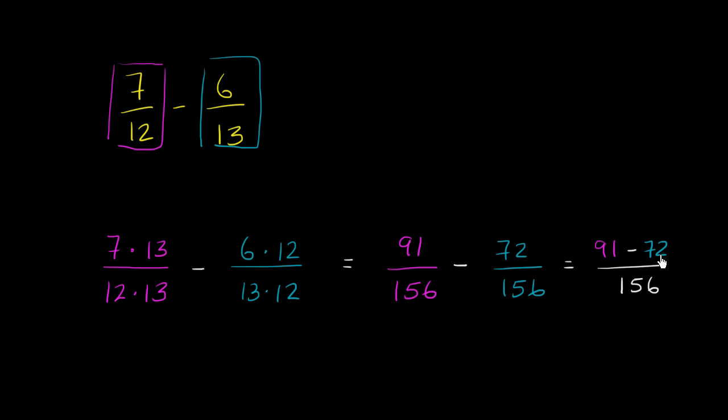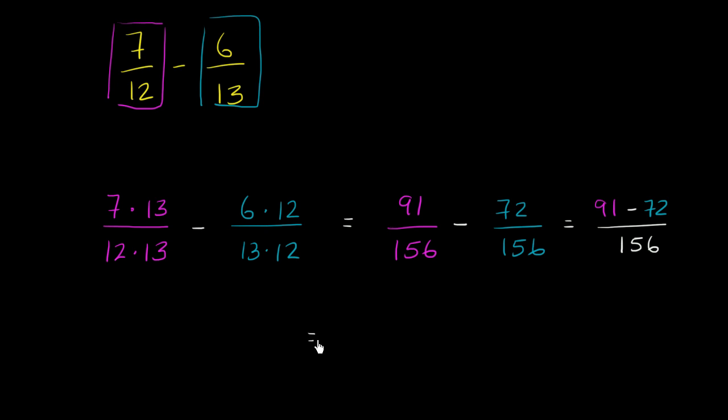Let's see, if it was 92 minus 72, it would be 20. That's one less, so it's going to be 19 over 156. So this is going to be equal to 19 over 156.